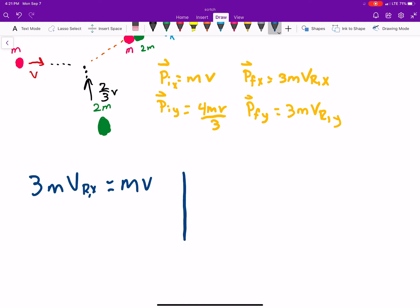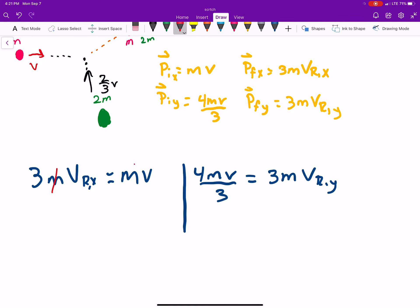And then, in the y direction, we can do the same thing. Initially, in the y direction, you have 4mv over 3 is equal to 3m vry. And, in both cases, the mass is dropped, which is good news for us.